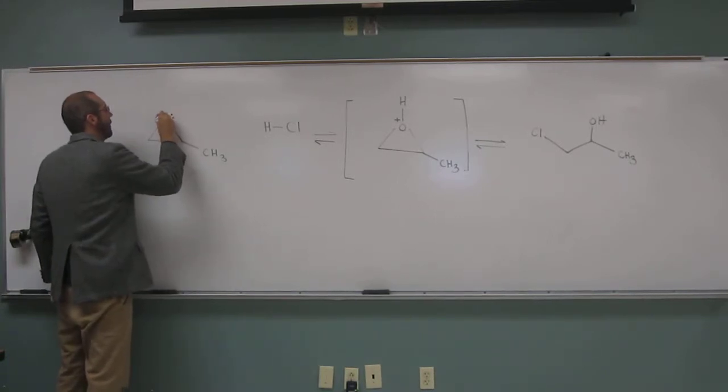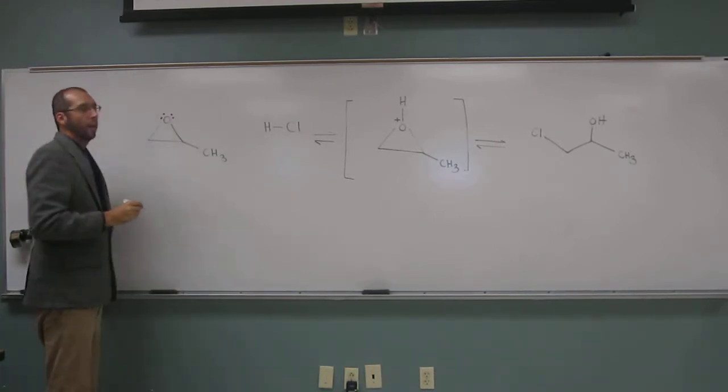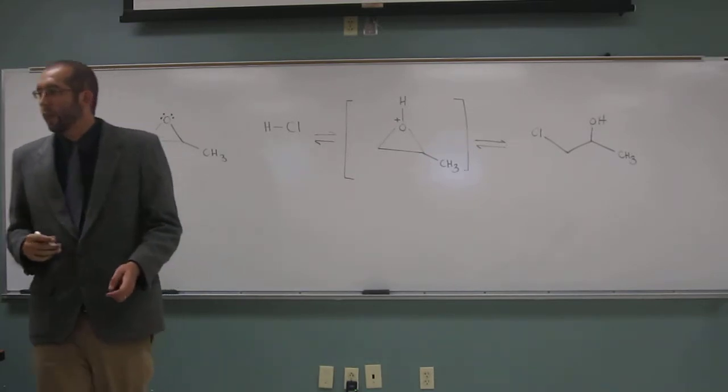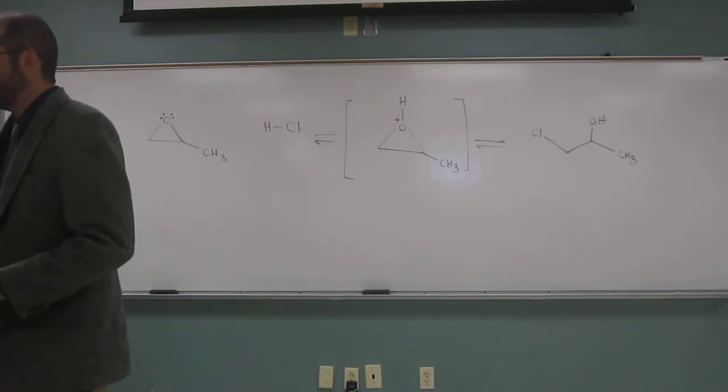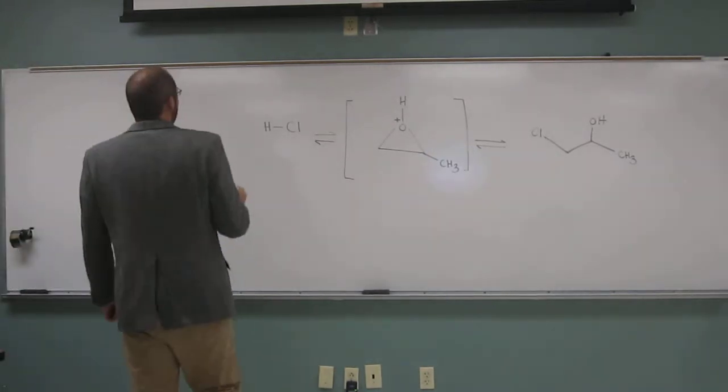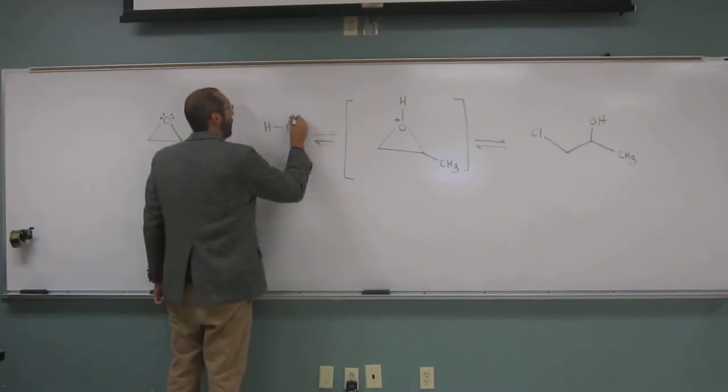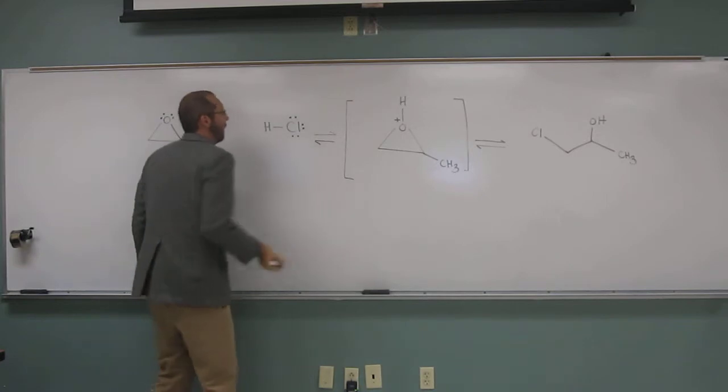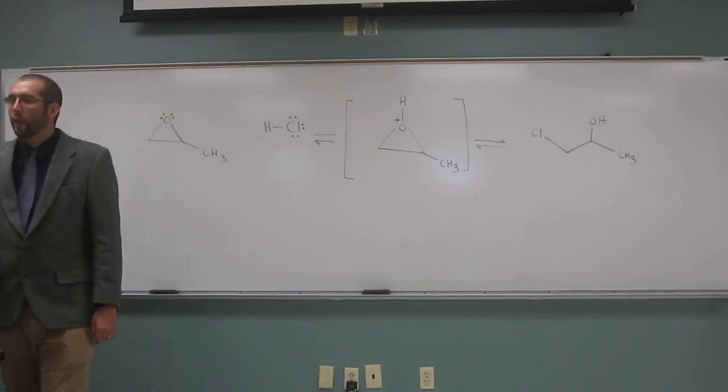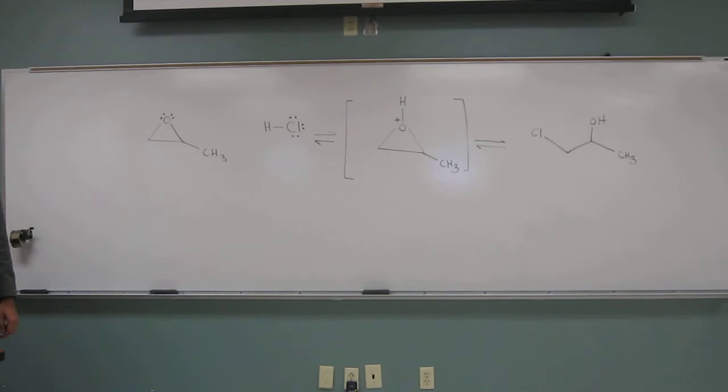So when you do that, then you can see where are the nucleophiles, where are the electrophiles, where are the acids, where are the bases. Remember also that reactions often times have more than one arrow. A polar arrow, remember, is a double headed arrow as opposed to a fish arrow.